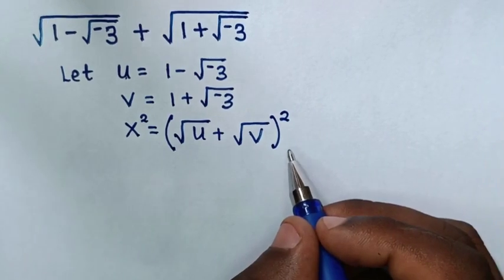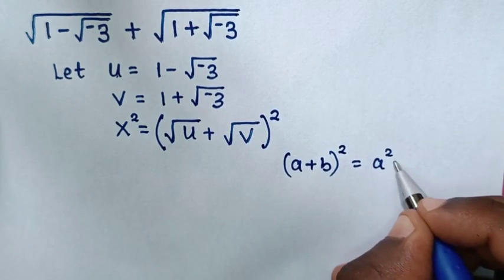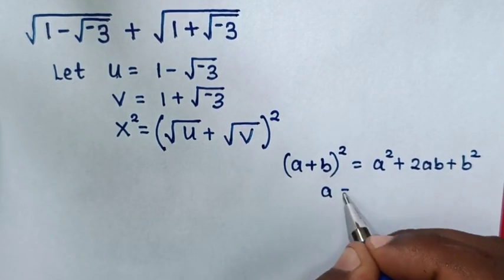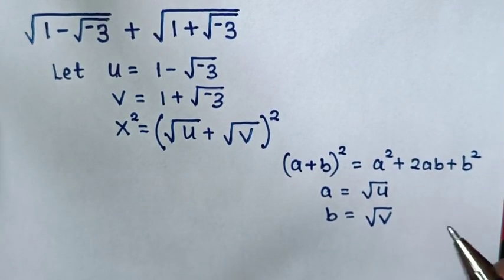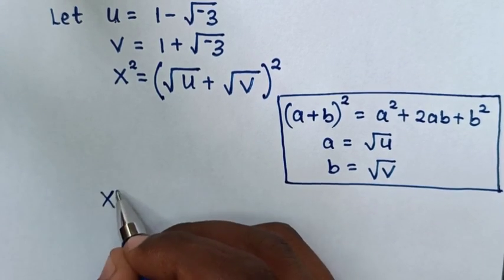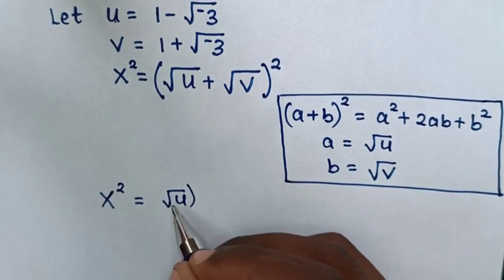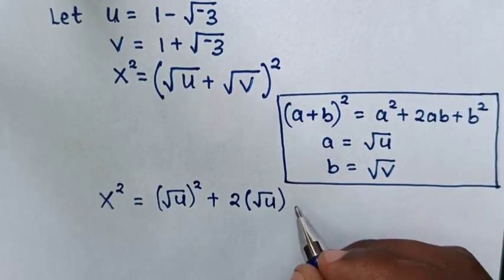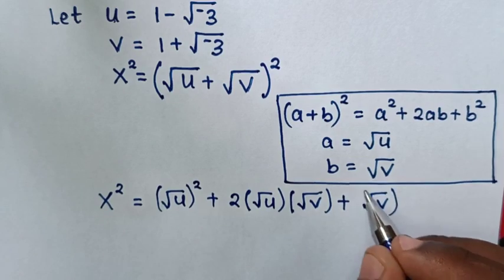In this part we will apply the rule: (a + b)² equals a² plus 2ab plus b², where a from our equation is equal to square root of u, and b is equal to square root of v. So x² equals (√u)² plus 2 times √u times √v plus (√v)².